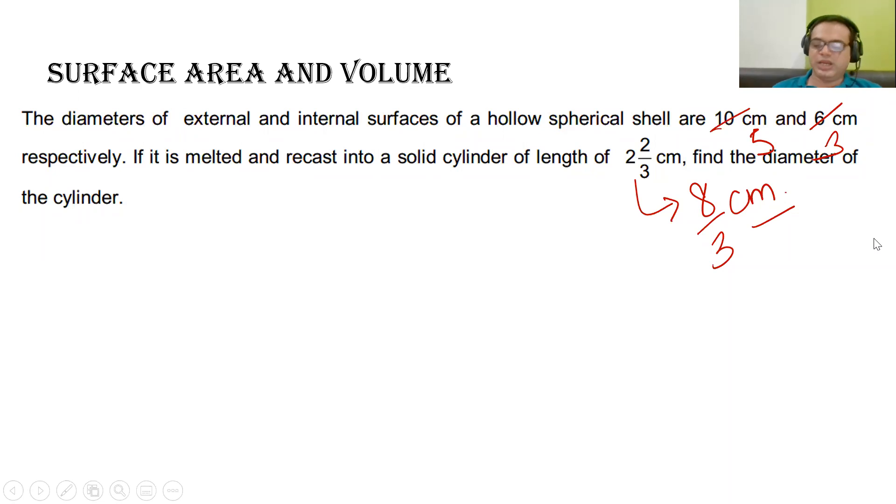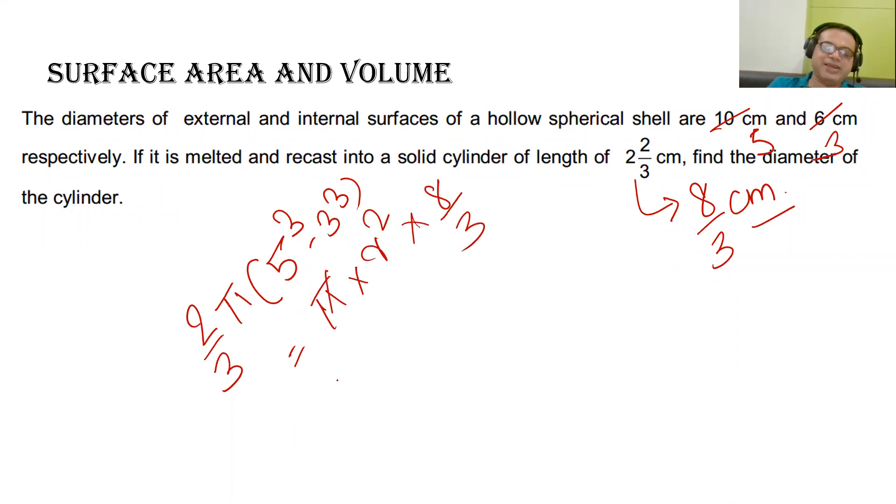We will apply the formula directly. So what I will have, 2 by 3 multiplied by pi multiplied by 5 cube minus 3 cube will be equal to pi multiplied by r square. r square I am not knowing, multiplied by 8 by 3. Now, first of all, this pi cut from pi.